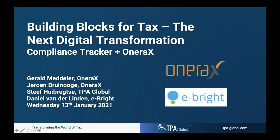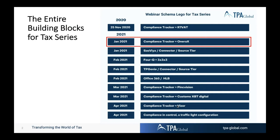Welcome everyone, this is the second of a whole series. The next slide shows the full series and highlights that we've already done VAT end-to-end technology with R7 VAT in November last year, together with the compliance tracker. Today, OniraX together with eBright will showcase the compliance tracker and its interaction with the enhanced tax engine functionality within SAP. The series will continue from January all the way up to April/May with different building blocks.